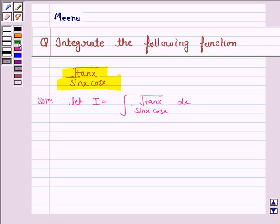Now we know that the derivative of tan x is secant square x. So we need to have secant square x here. So we multiply the numerator and the denominator by secant square x.